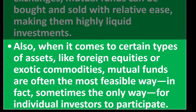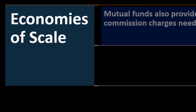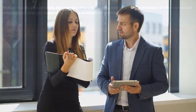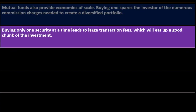When it comes to certain types of assets like foreign equities or exotic commodities, mutual funds are often the most feasible — and sometimes the only — way for individual investors to participate. Mutual funds also provide economies of scale. Buying one spares the investor from the numerous commission charges needed to create a diversified portfolio. If you buy individual stocks you might pay someone for each trade, which can get quite costly, whereas buying the mutual fund means you're charged for the pool as a whole.